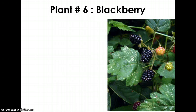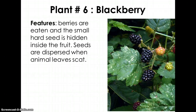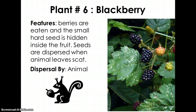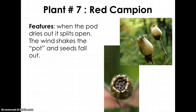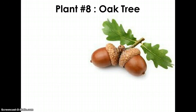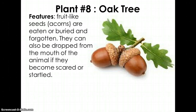Plant number six is a blackberry — the berries are eaten and the small hard seed is hidden inside the fruit; seeds are dispersed when the animal leaves scat. The answer is animal. Plant number seven is the red campion — when the pod dries out it splits open, and when the wind shakes the pod the seeds fall out. The answer is wind. Plant number eight is the oak tree — the acorns are eaten or buried and forgotten, or dropped by a startled animal. The method of dispersal is animal.